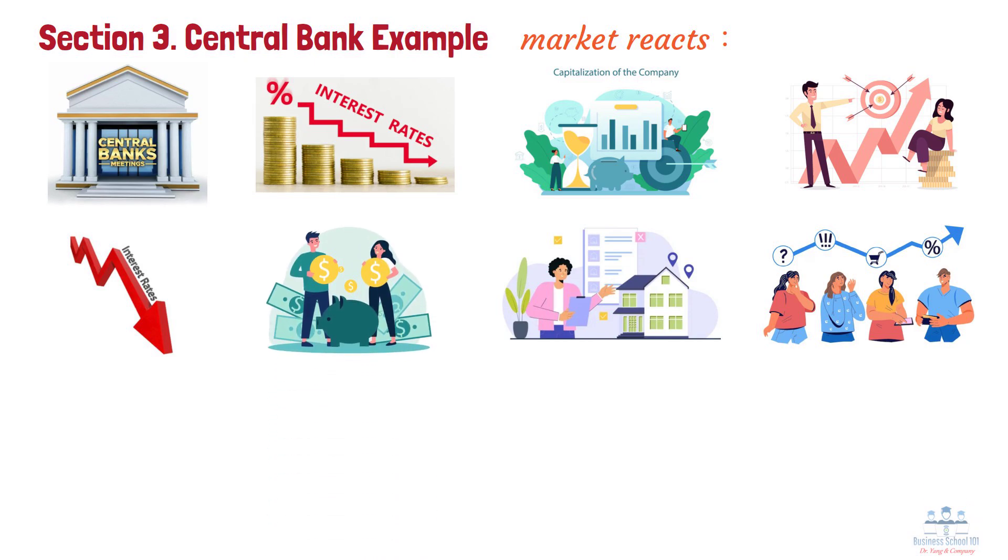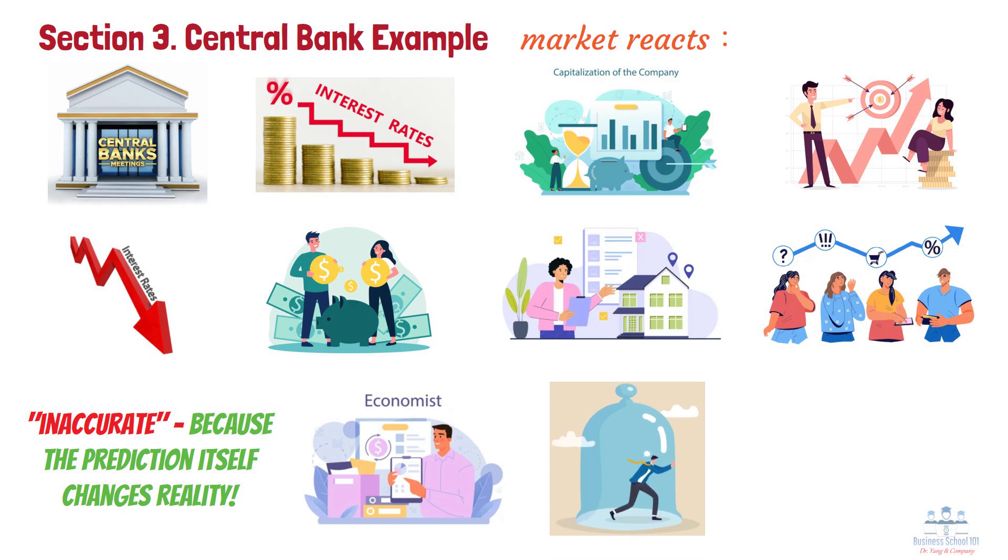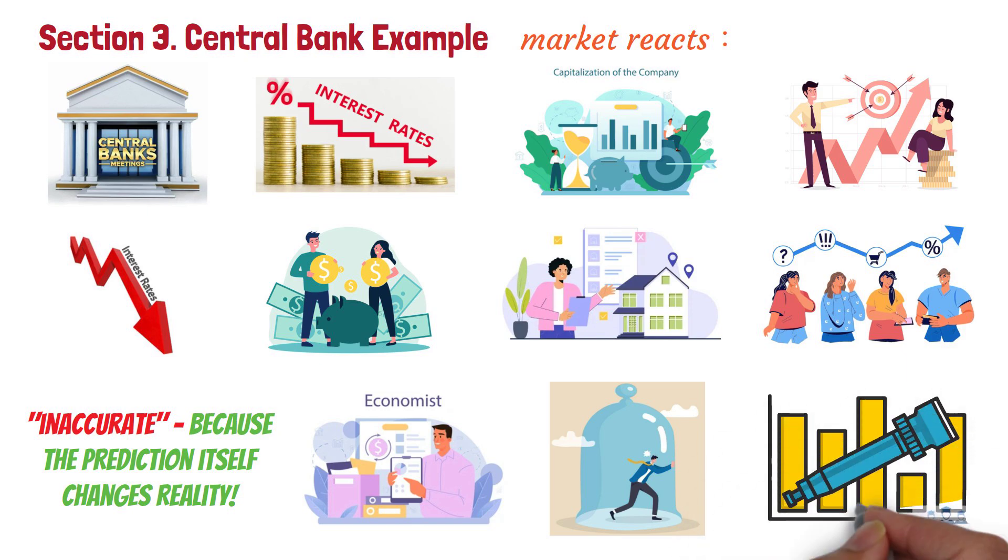This explains why economists' predictions always seem inaccurate—because the prediction itself changes reality. The accuracy of economic forecasts depends not just on economists' professional skills but is constrained by the unique endogenous characteristics of the economic system. Every prediction becomes a new variable influencing the future, and this self-referential nature makes accurate prediction extraordinarily difficult.